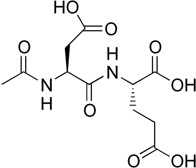N-acetylaspartylglutamic acid, N-acetylaspartylglutamate, or NAAG, is a peptide neurotransmitter and the third most prevalent neurotransmitter in the mammalian nervous system. NAAG consists of N-acetylaspartic acid and glutamic acid coupled via a peptide bond.